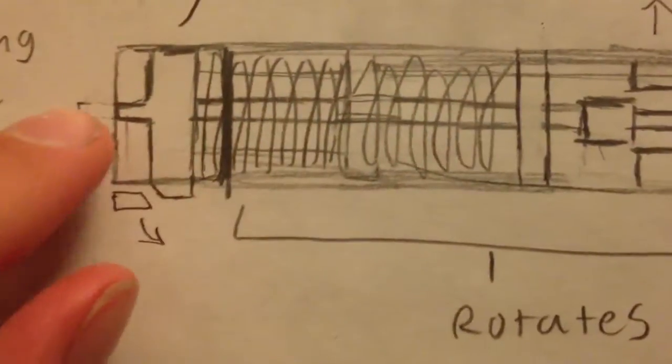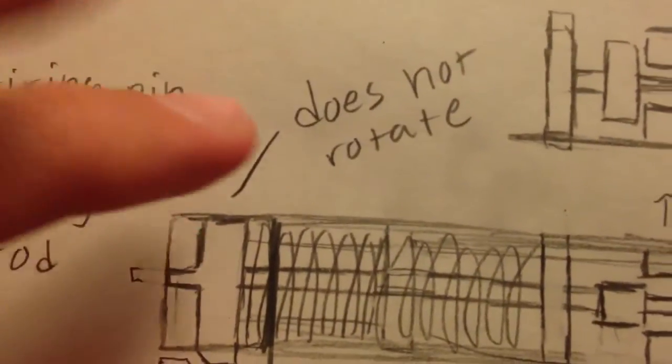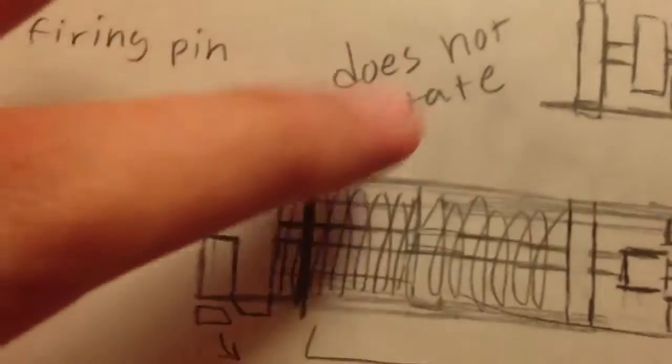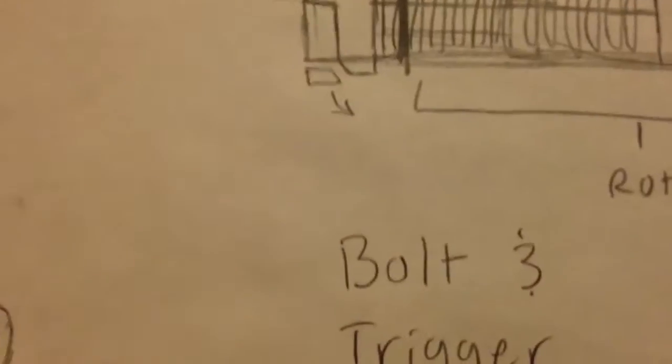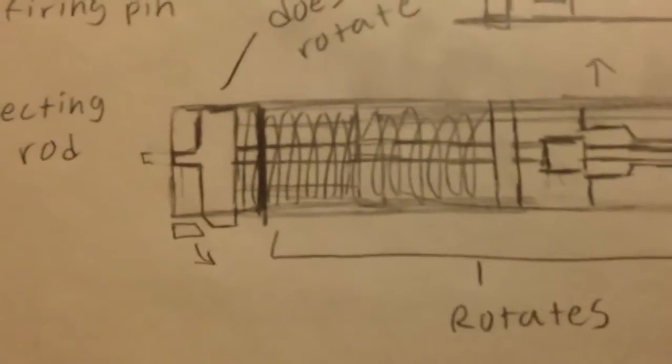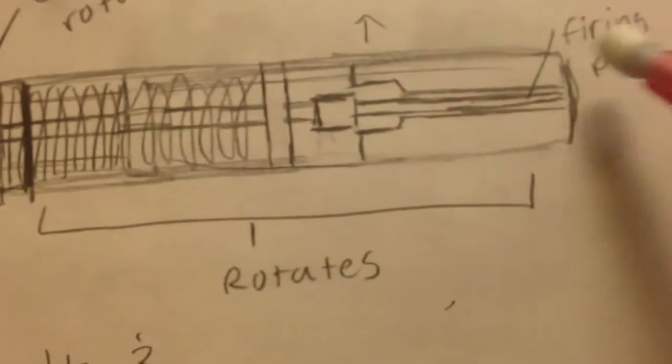Now, this part screws on, so it's a different section. Well, I don't think it screws on actually, it just kind of rolls because it does not rotate. You don't want the trigger and the sear to rotate, but the rest of this does rotate.